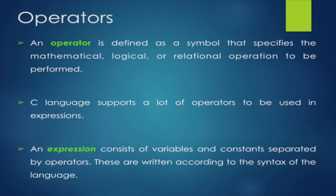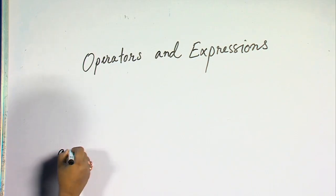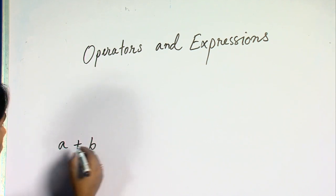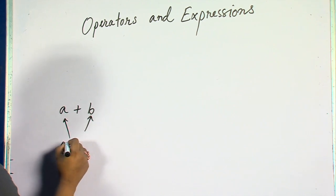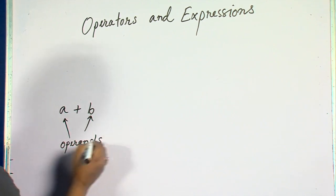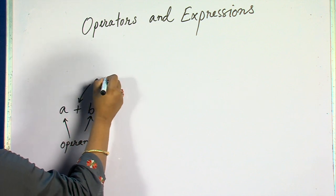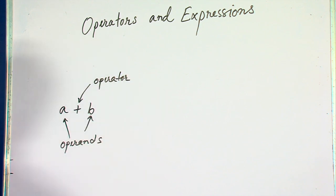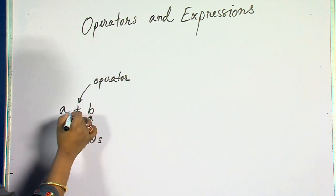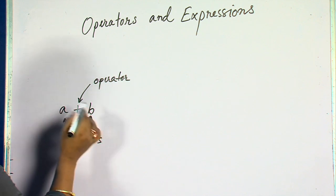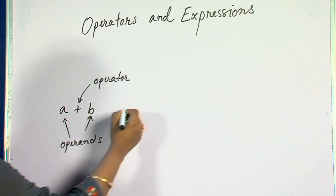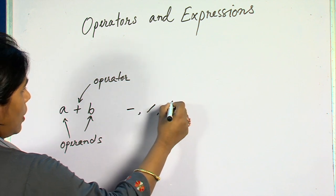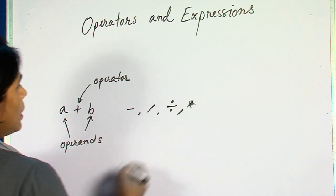Let me discuss what is an operator and what is an operand. Suppose I have written a statement A plus B. Here, A and B are known as operands, and the plus symbol is the operator. Plus is a binary operator because it operates on two operands. Similarly, minus, division, modulus, and multiplication are all binary operators.